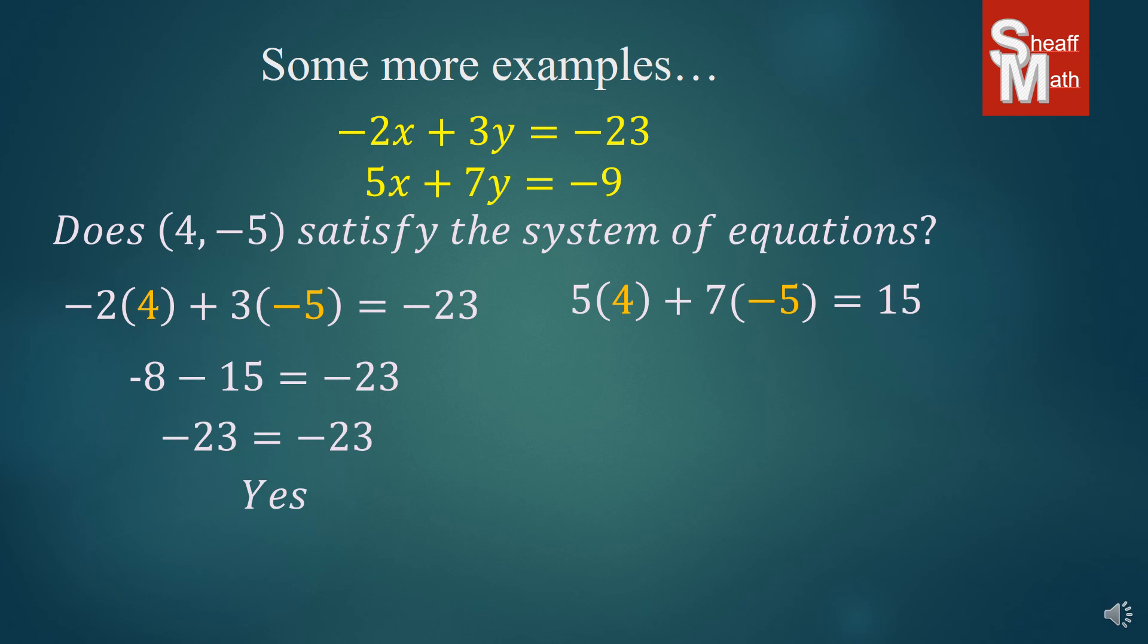And then we put 4 and -5 into the x and the y of the second equation. Simplify. 20 minus 35 is -15, and so this does not equal.